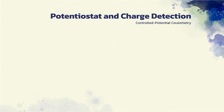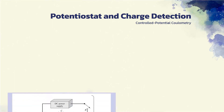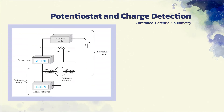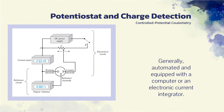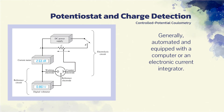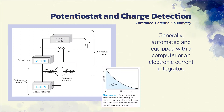In controlled potential coulometry, a potentiostat with this design is often used. Generally, however, the potentiostat is automated and equipped with a computer or an electronic current integrator that gives the charge in coulombs necessary to complete the reaction, such as shown in this figure.